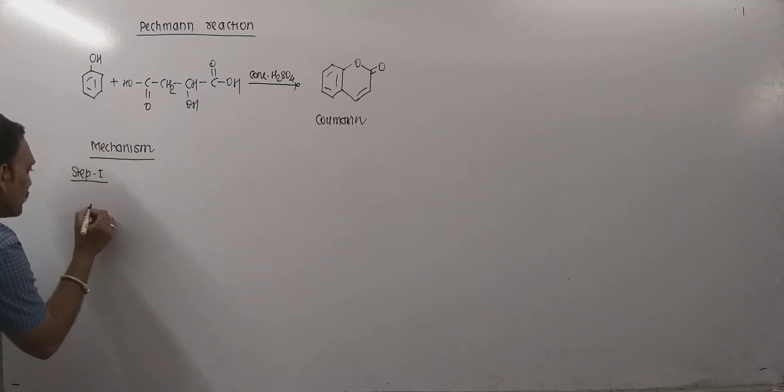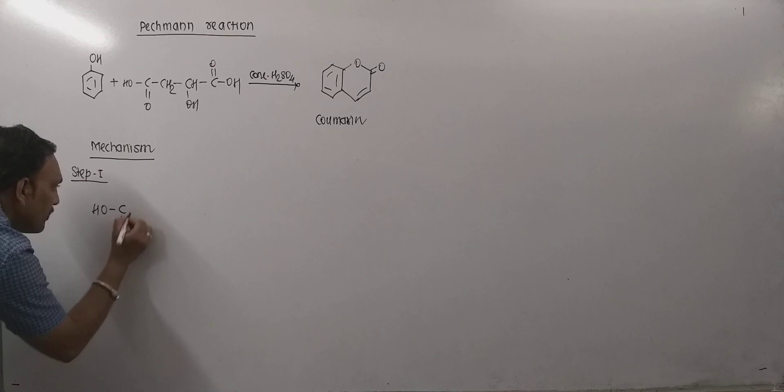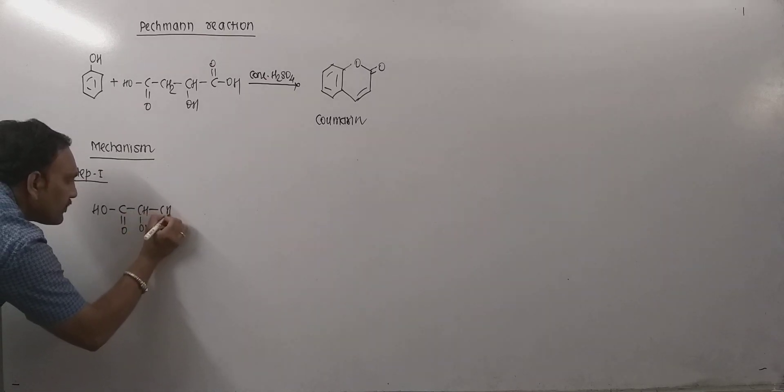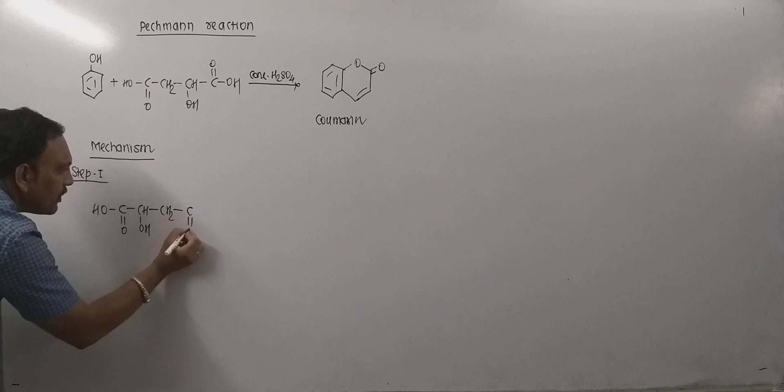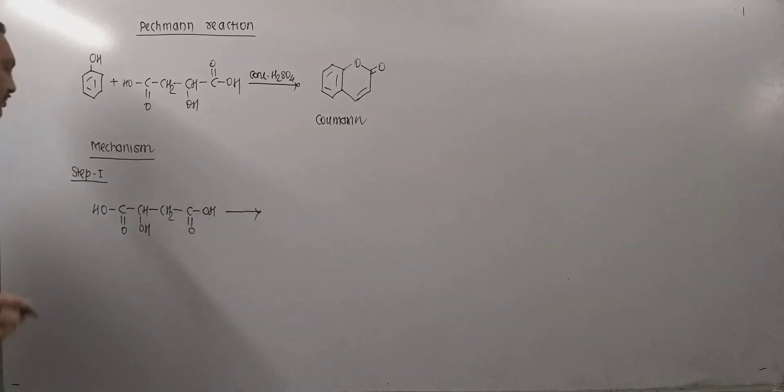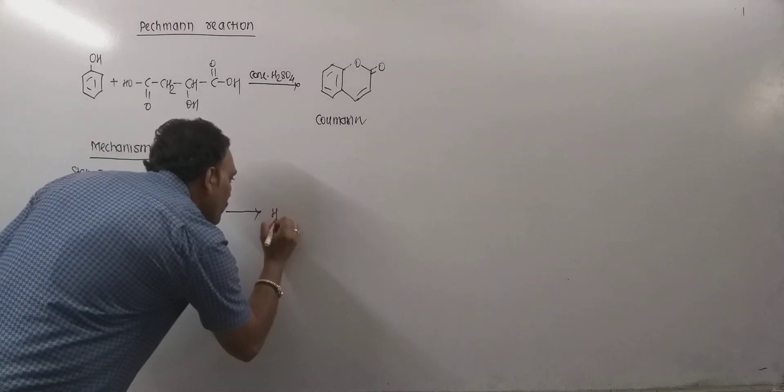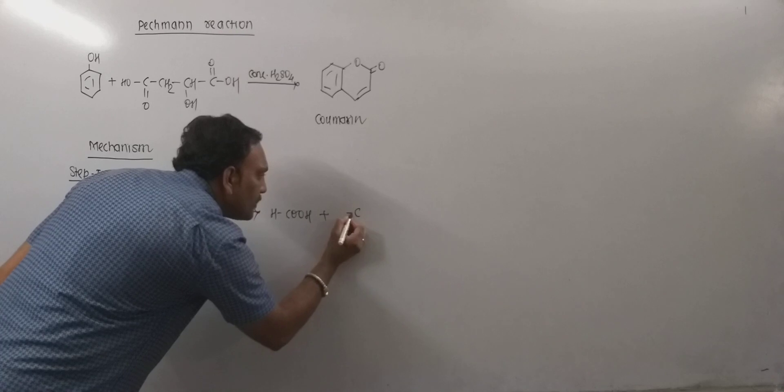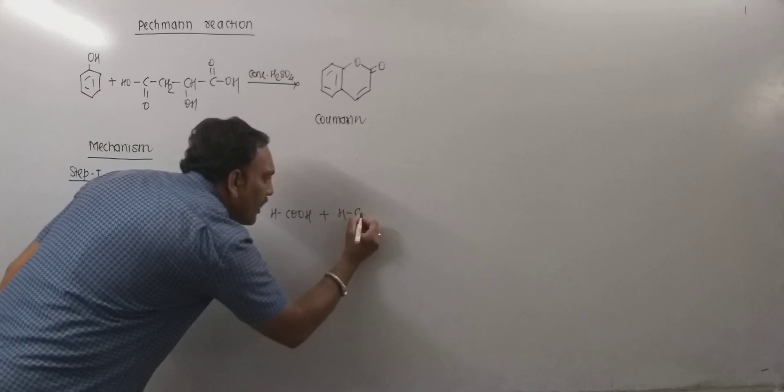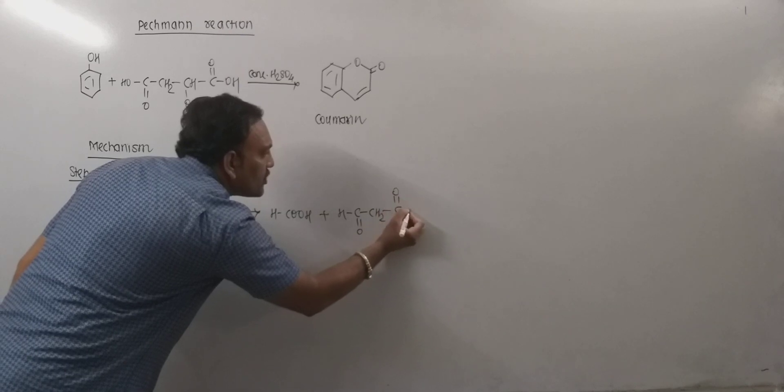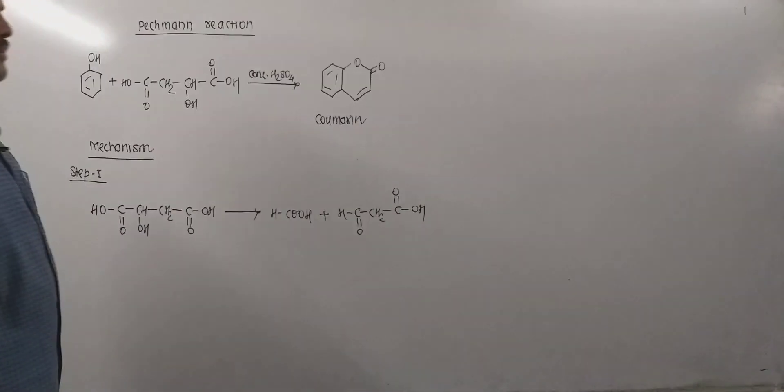Thus exactly what happens in step number one - in very first step this malic acid undergoes decomposition producing formic acid and malonaldehyde acid which can be given as shown.